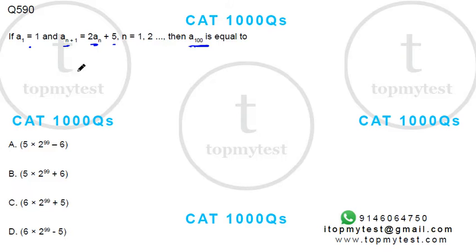So let's just write these values. a₁ is 1. a₂ will be twice of 1, that's 2 plus 5, which is 7. a₃ is 2 times 7 which is 14 plus 5, so 19.